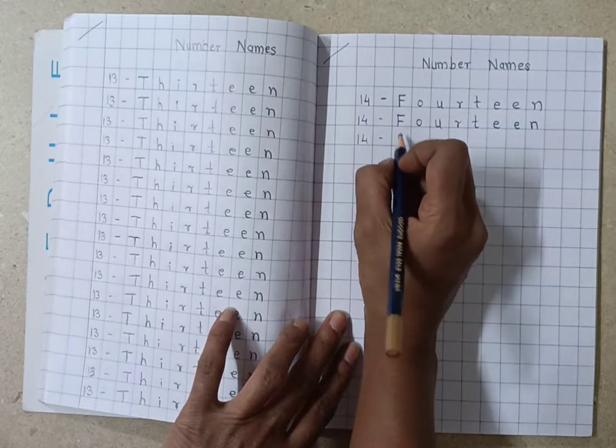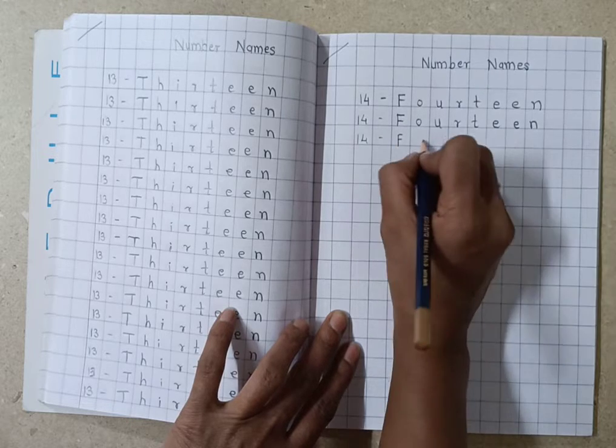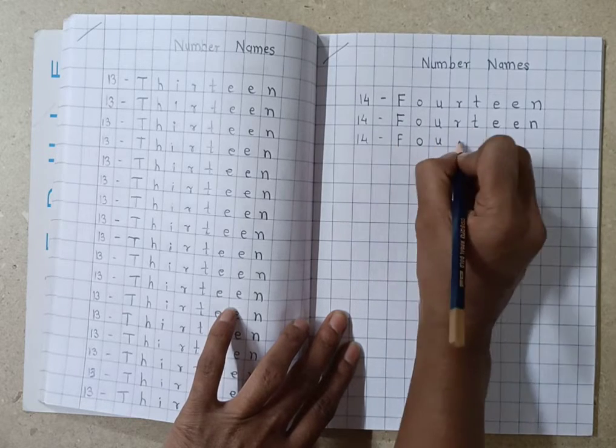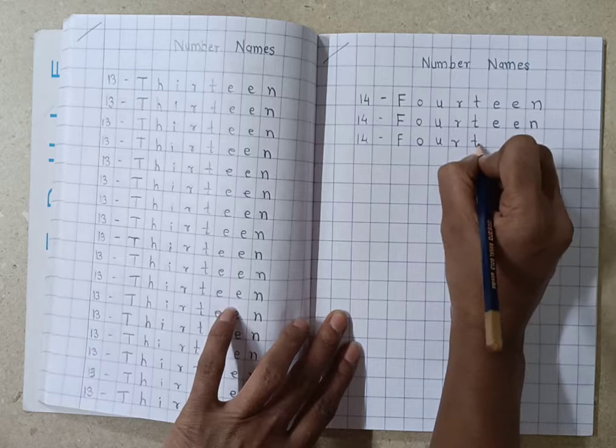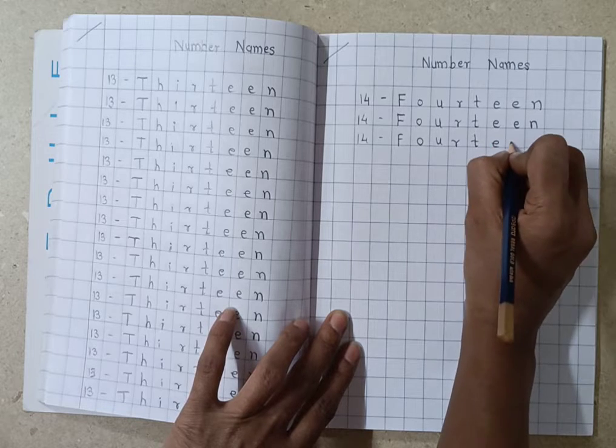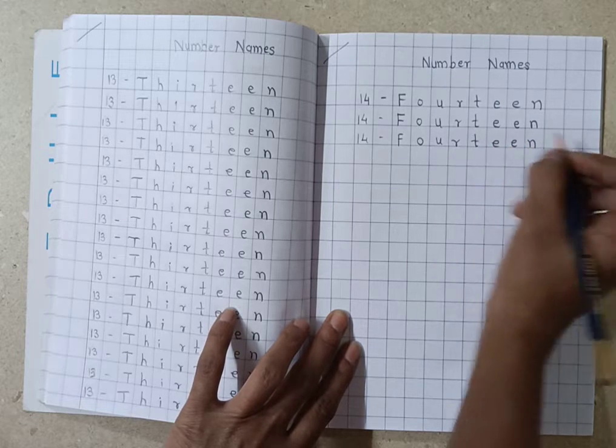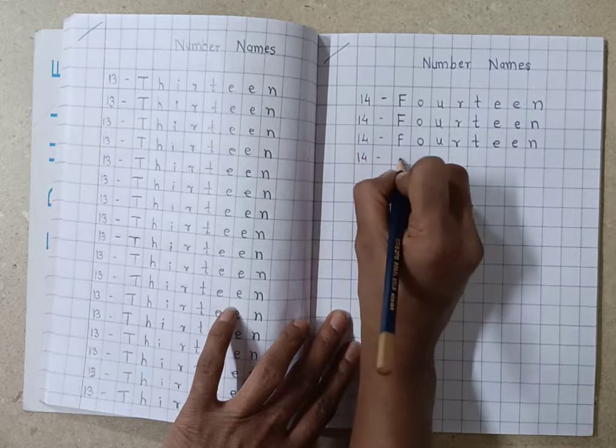Students, always remember that first letter should be capital and other should be small. Okay, just the first letter should be capital and the other should be small.